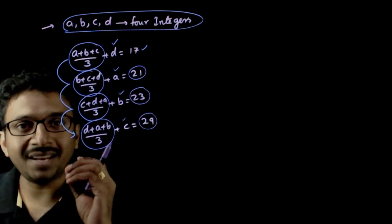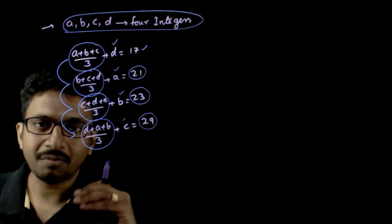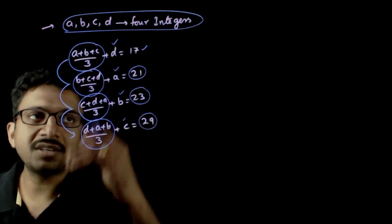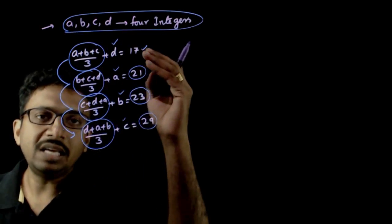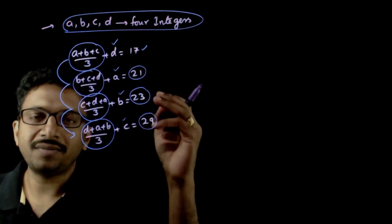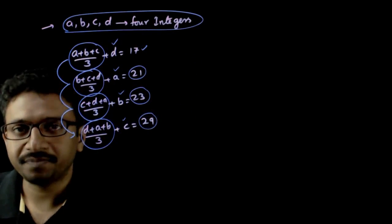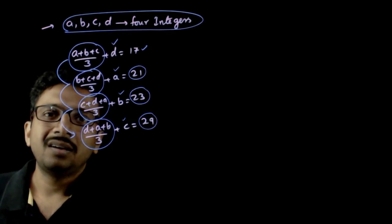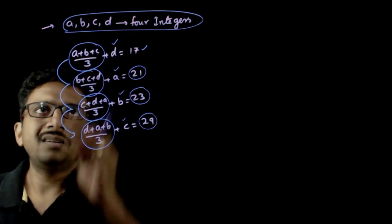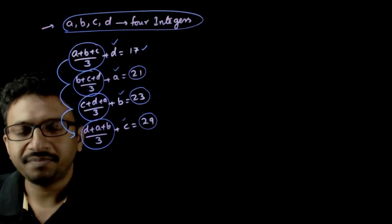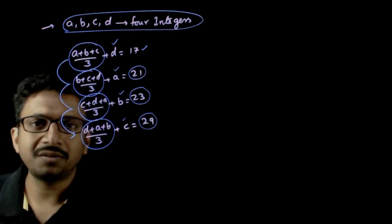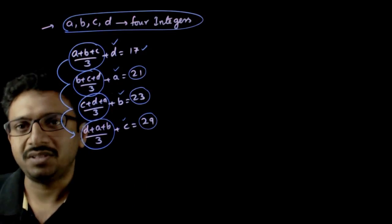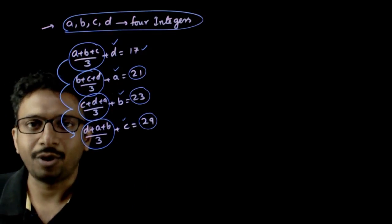So, the average of any three numbers plus the remaining number gives four such results: 17, 21, 23, and 29. You are asked to find the integers a, b, c, d — specifically, one of the four values. You are given four options.